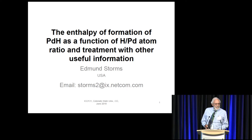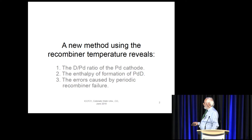People who study cold fusion using electrolytic cells frequently use a catalyst in their cell to recombine the hydrogen and oxygen back to water. If you simply measure the temperature of that recombiner, you can obtain some very useful information. You can obtain the D to PD ratio of the cathode very simply. You can calculate the enthalpy of formation if you use that information combined with the information from the calorimeter. And you can also identify errors that result because the recombiner that you're using doesn't function properly.